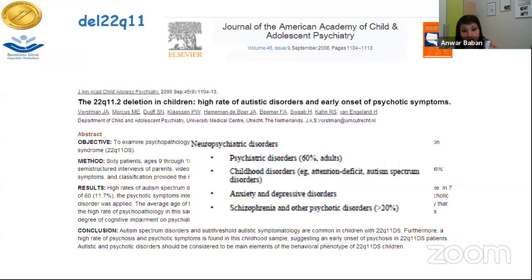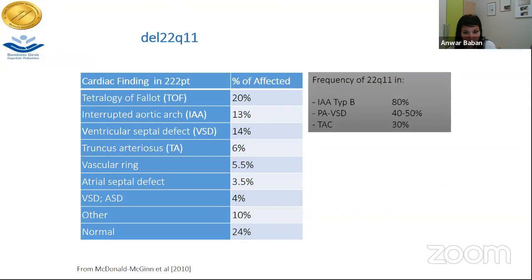The most frequent congenital heart defect in 22q11 deletion is tetralogy of Fallot, seen in about 75% of cases. However, when called to an intensive care unit where the diagnosis is interruption of the aortic arch, one of the first diagnoses to exclude is 22q11 deletion — its frequency can reach 80% in that context.